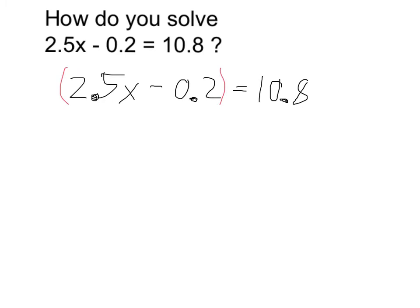In this case, look what happens when I multiply everything by 10. I'm going to essentially get rid of all my decimals. 10 times 2.5 is 25, so I get 25x, times the minus 0.2 is going to be a minus 2, and times the 10.8 is going to be 108.